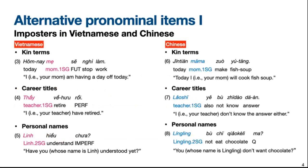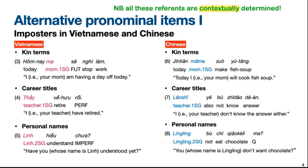For example, in examples 3 and 4, the Vietnamese kinship term mom (mẹ) and the career title teacher (thầy) are used to refer to the speaker, while the personal name Linh in example 5 is used to refer to the addressee. Similarly, in Chinese examples 6 and 7, the kinship term mom (mā) and the career title teacher (lǎo shī) also refer to the speaker, and the personal name Lin Lin in example 8 also refers to the addressee. A crucial point is that the actual reference of these Vietnamese and Chinese impostors is contextually determined. So in example 3, the kinship term mom is glossed as first-person singular because it is uttered by a mother to her child, but the same kinship term would get a second-person reference if said by a child to its mother.